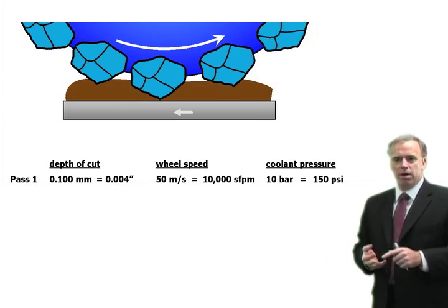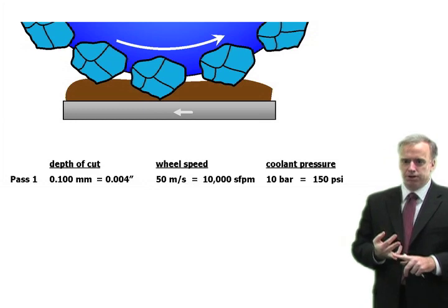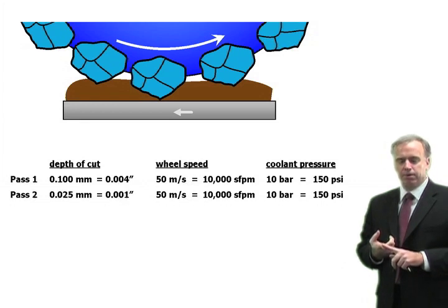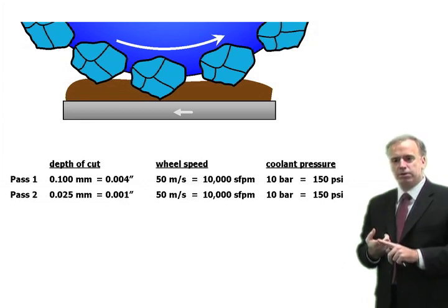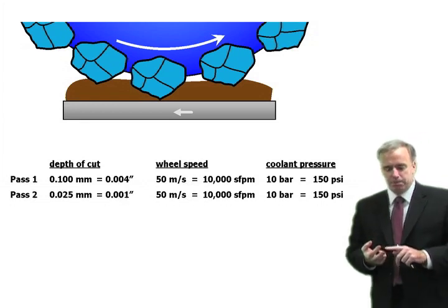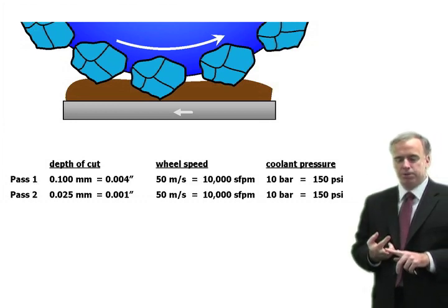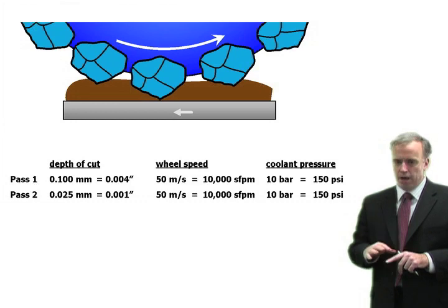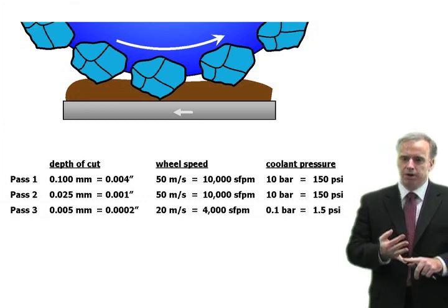You do your regular grinding. Then you want to do some finish grinding, give yourself a better surface finish and better tolerances. So you drop that depth of cut to let's say 25 microns or a thou, keep your same 50 meter per second wheel speed, keep your same coolant pressure, and grind off a finishing pass.